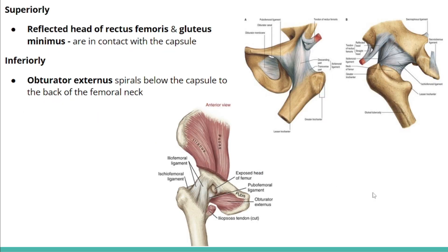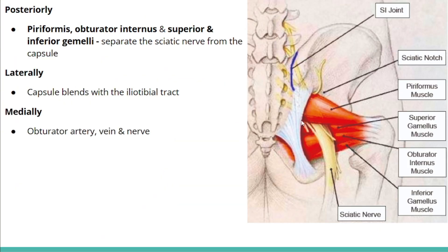Superiorly, the reflected head of rectus femoris and the gluteus minimus muscle are in superior relation with the capsule. Inferiorly, the obturator externus muscle spirals and passes below the capsule towards the neck of the femur. Posteriorly, small gluteal muscles — piriformis, obturator internus, superior and inferior gemelli — separate the sciatic nerve from the joint capsule. Laterally, the iliotibial tract blends with the joint capsule, and medially the obturator vessels and nerve relate to the hip joint.